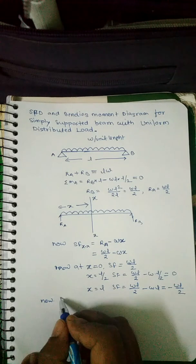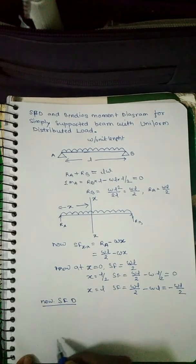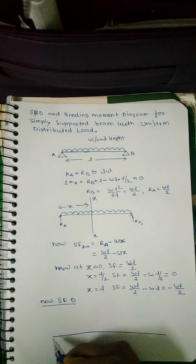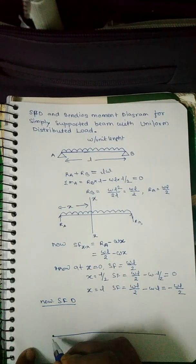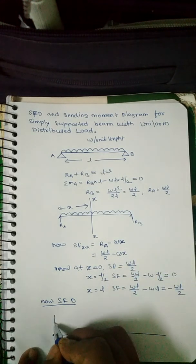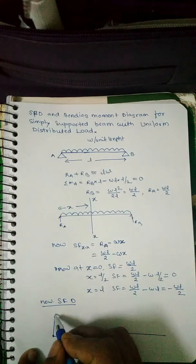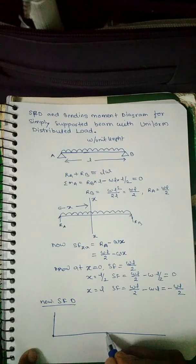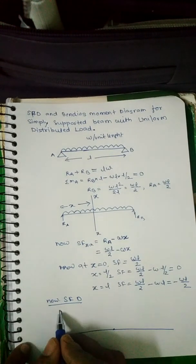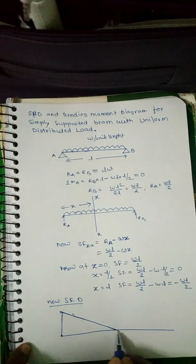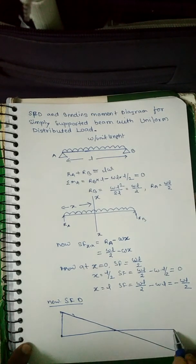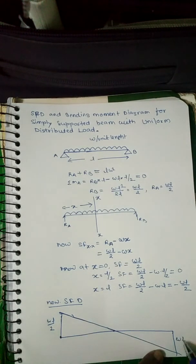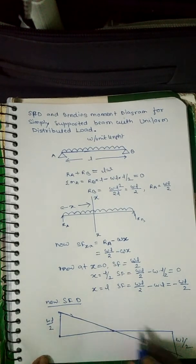The shear force diagram: at x equal to 0, shear force is wL/2; at x equal to L/2, shear force is 0; and at x equal to L, shear force is minus wL/2. The diagram passes linearly through these points, with +wL/2 on one side and -wL/2 on the other. This is the shear force diagram.